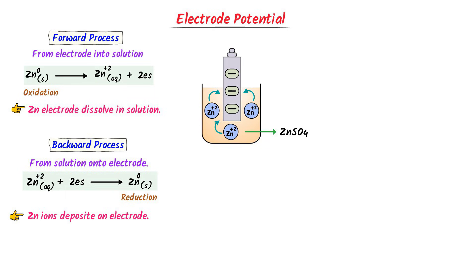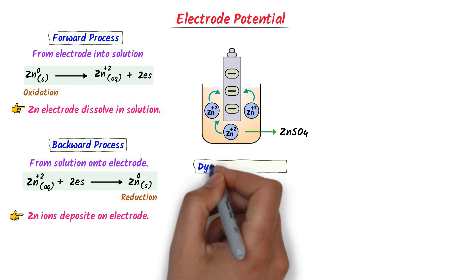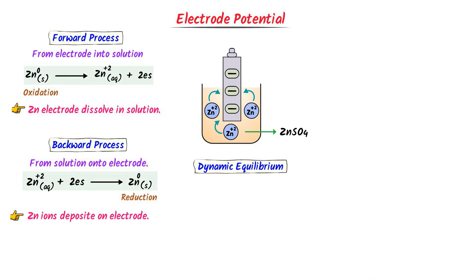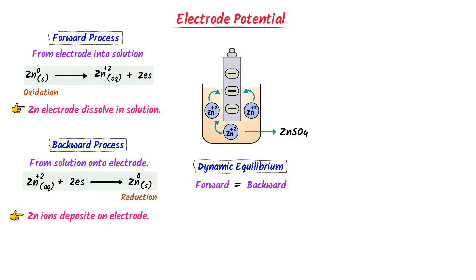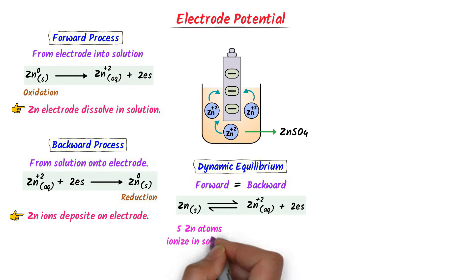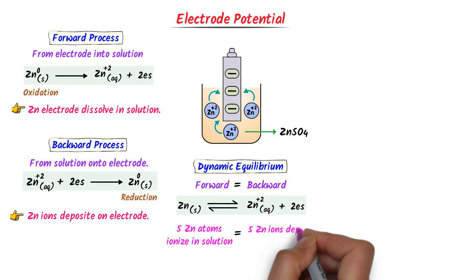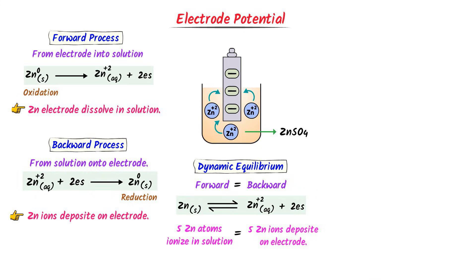Due to these forward and backward processes, dynamic equilibrium is established. After some time, the forward process becomes equal to the backward process — the rate of zinc electrode dissolving in the solution equals the rate of zinc ions depositing on the electrode. For example, if 5 zinc atoms ionize into solution, then 5 zinc ions deposit on the electrode. This stage is called dynamic equilibrium.